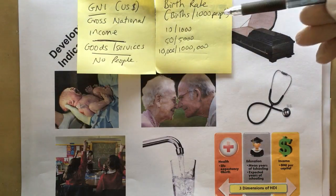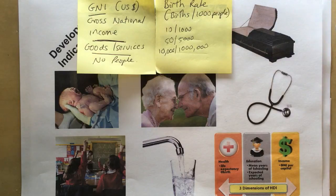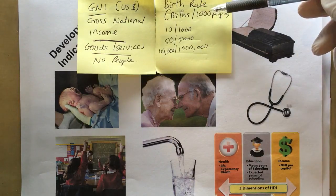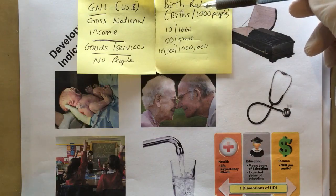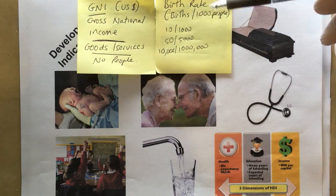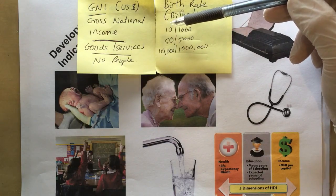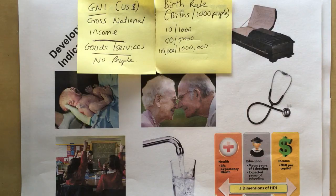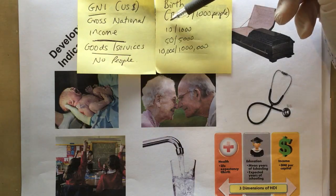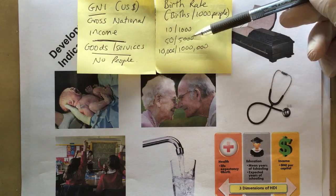Next, the birth rate. This can be quite useful to tell us about a country — it's the number of births that take place every year, measured as the number of births for every thousand people. Very few countries have exactly a thousand people, so let's look at how this works.